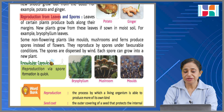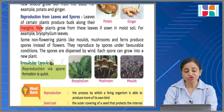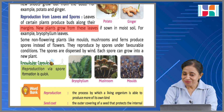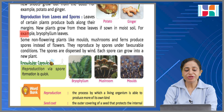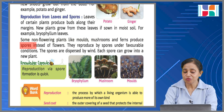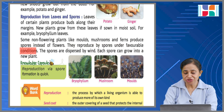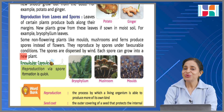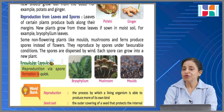Reproduction from leaves and spores: leaves of certain plants produce buds along their margins, and new plants grow from these leaves if sown in moist soil. For example, bryophyllum leaves. Some non-flowering plants like mosses, mushrooms, and ferns produce spores instead of flowers. They reproduce by spores — under favorable conditions, spores are dispersed by wind and each spore can grow into a new plant. Knowledge capsule: reproduction via spore formation is quick.